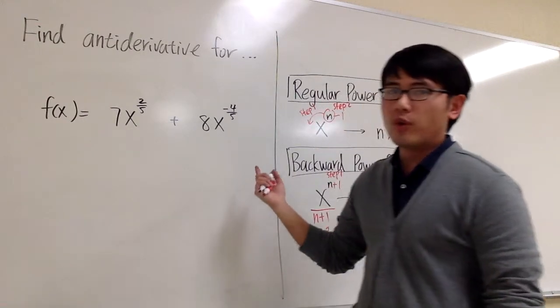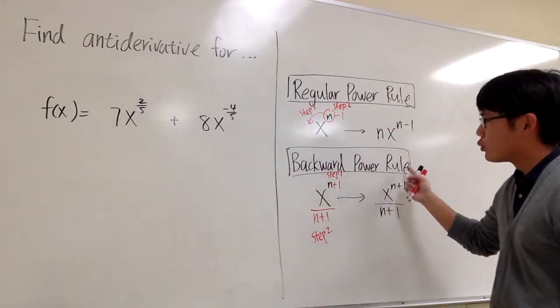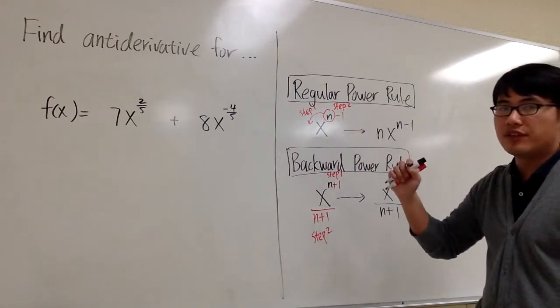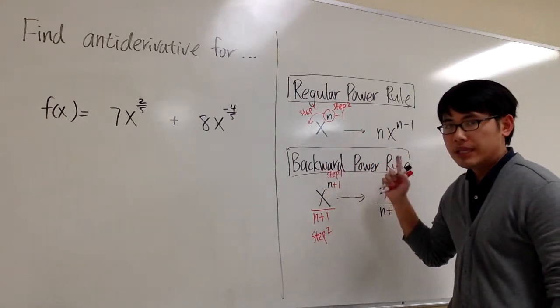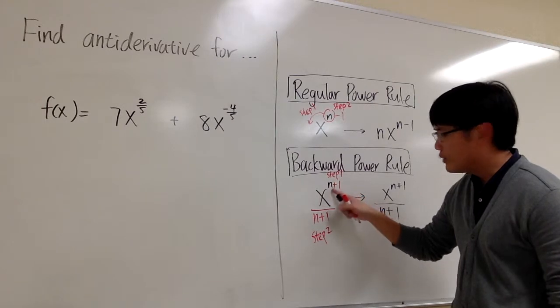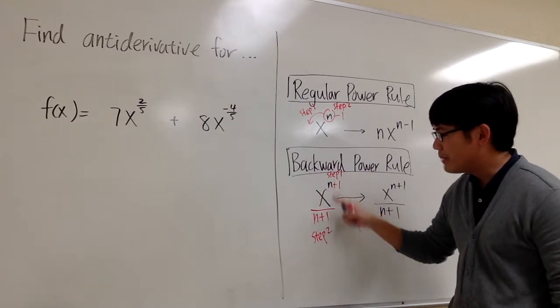Since both of these are in the power form, we can use the backward power rule to help us get the anti-derivative. For the backward power rule, we are going to add one to the exponent first and then divide it by the new exponent.